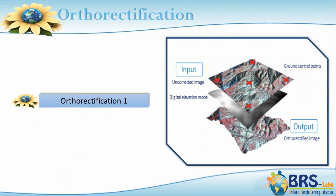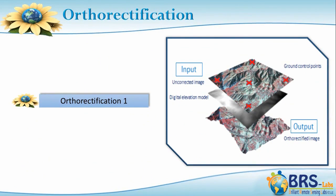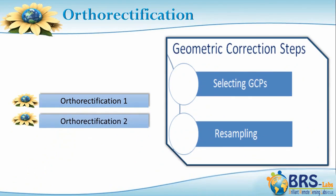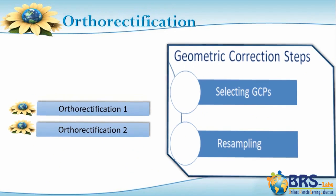Fifth, the Ortho-Rectification group of lectures. In Ortho-Rectification 1, we will discuss the meaning of ortho-rectification, its benefits, and the required data for its implementation. In Ortho-Rectification 2, we will discuss how to implement the ortho-rectification, then together execute the two stages of this process.